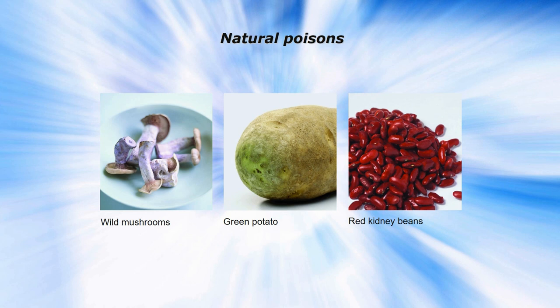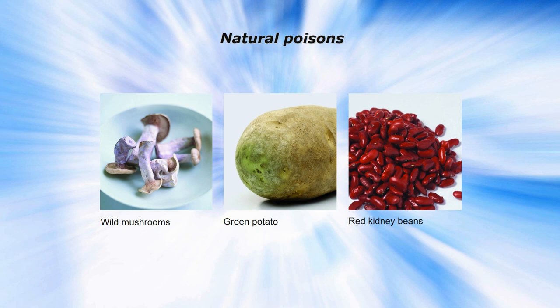Other natural poisons: always identify edible fungi and avoid poisonous types — some can be lethal. Green or sprouting potatoes contain a build-up of a glycoalkaloid poison from chlorophyll that can affect the young and elderly, so don't use green potatoes or try to remove the sprouts. Dried red kidney beans contain a toxin that must be deactivated by boiling for at least 15 minutes — soak them overnight first, then boil for 15 minutes before use.